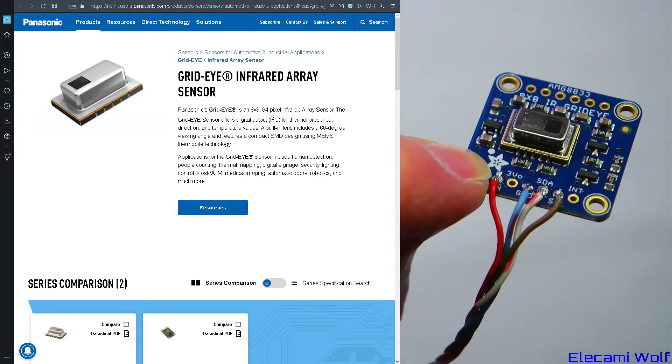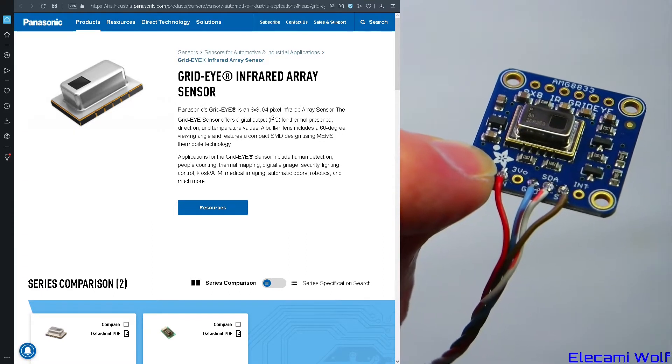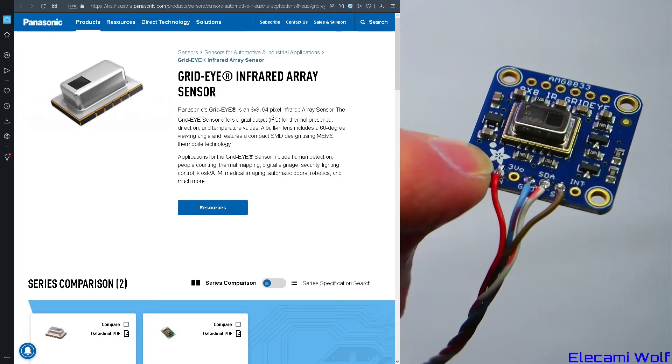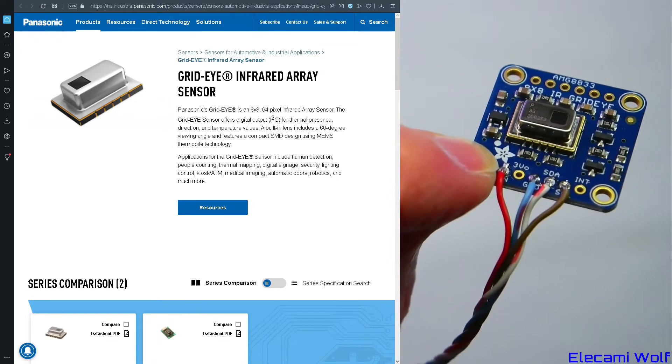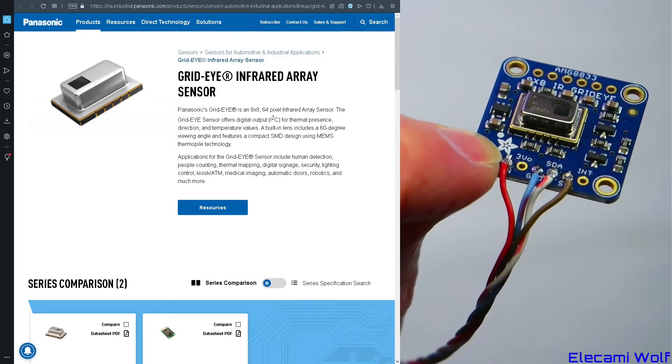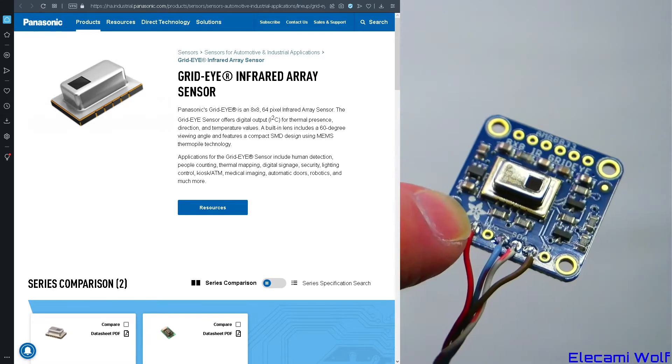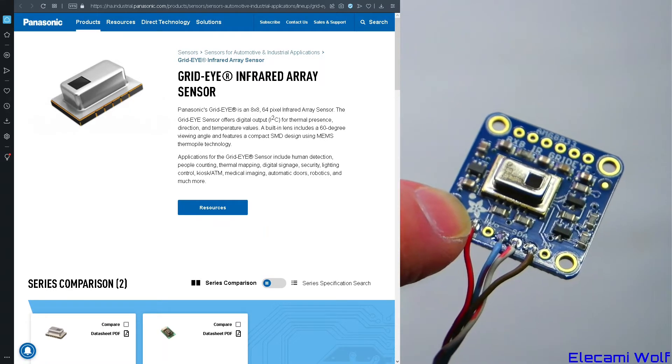You can buy these sensors soldered onto breakout boards to allow easier use. This one from Adafruit has a regulator and level shifters on it, making it suitable for 3.3 or 5V use. The sensor itself can be purchased in 3.3 or 5V versions, and there are two different sensitivities available. The sensor I have is an AMG8833.